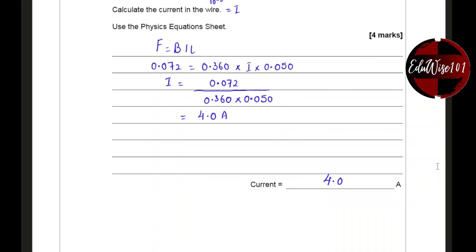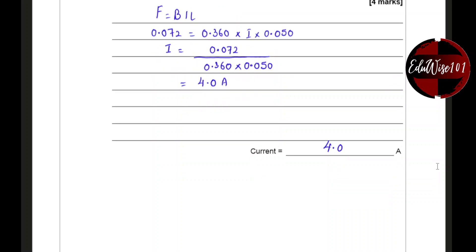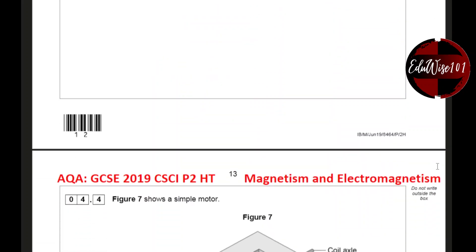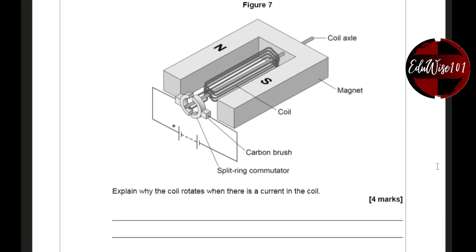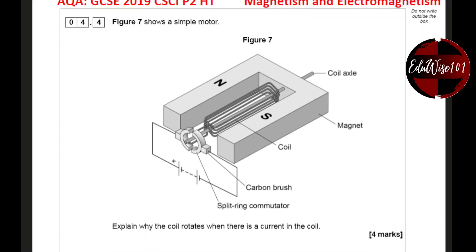The answer is 4.0 amps. Next question, 4.4. Figure 7 shows a simple motor. Explain why the coil rotates when there is a current in the coil — for 4 marks.